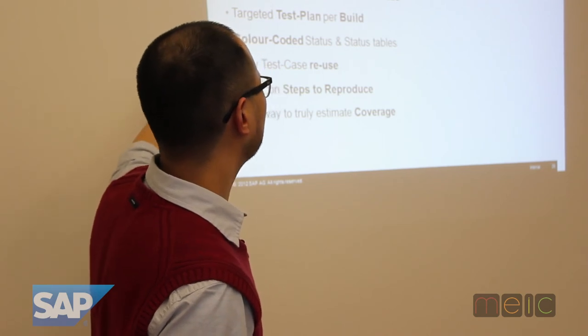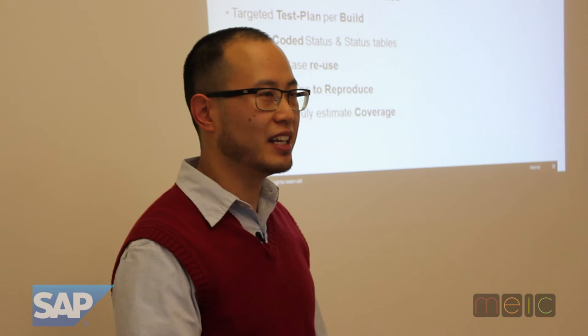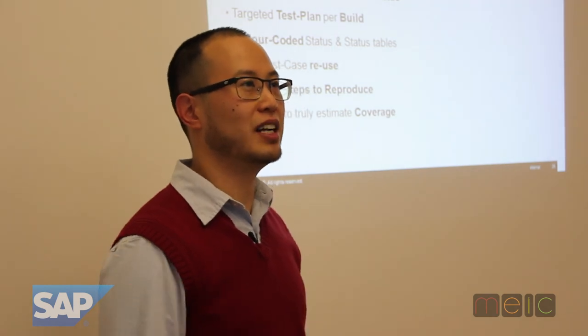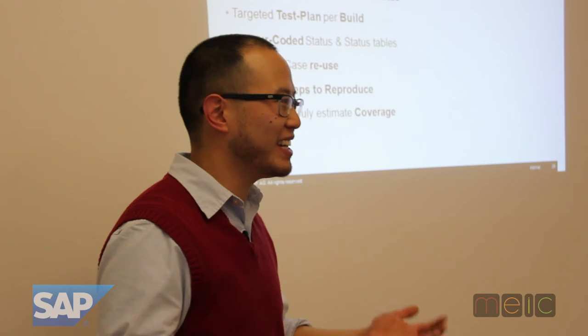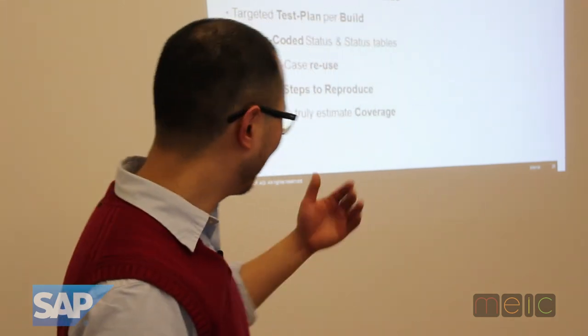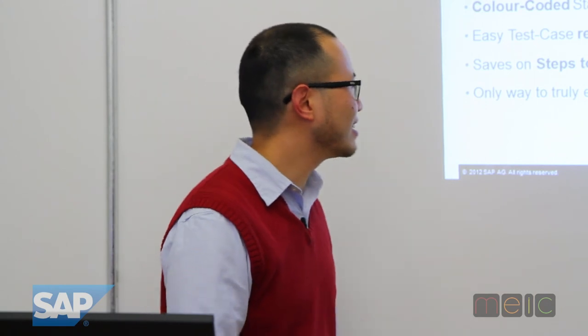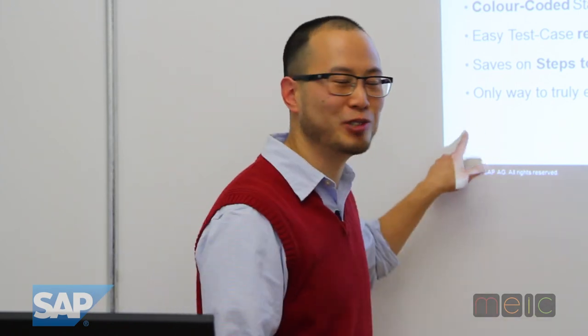Color-coded status makes it easy for test case reuse. I've looked at a bug and seen the steps to reproduce and thought we should run that every time — so you cut and paste it and put it in the test plan. Some tester is willing to create a test case for you, and it's free work. It's the only way to truly estimate coverage. If you had a really good system and don't have any bugs, I still don't know the answer — you either didn't run any test cases or you ran them and they all succeeded. A test management tool will tell you that difference.